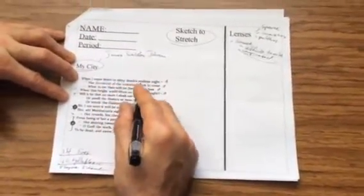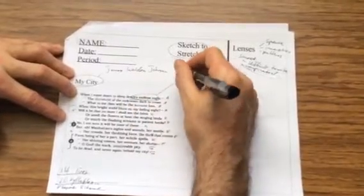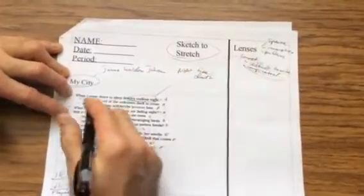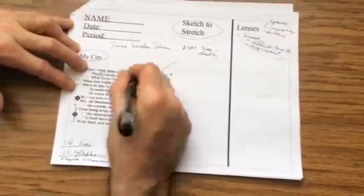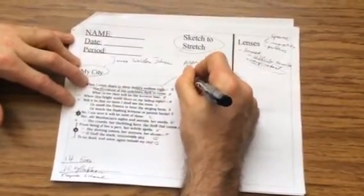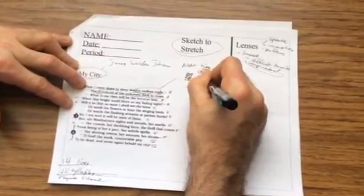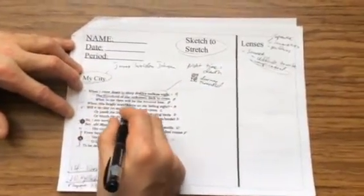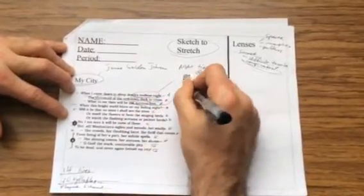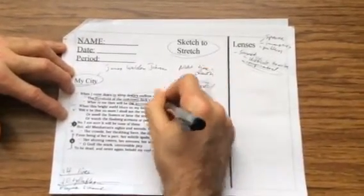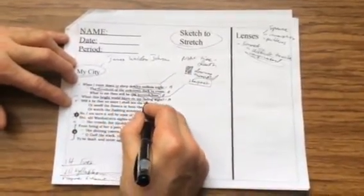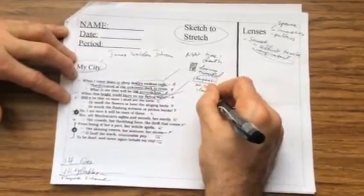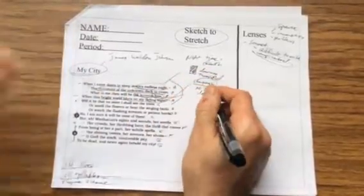But here's what we're going to do. We're going to come down to this. So, when I come down to sleep death's endless night - which here's a metaphor, night time - the threshold of the unknown dark to cross - another metaphor for death, which is to cross a threshold. A threshold is a doorway. What to me then will be the keenest? And keen means to be, like, sharpest. Which one is going to be the sharpest loss? When this bright world blurs on my fading sight - when I can no longer see, particularly because you can no longer see when you're dead. So, what will I miss the most in this frame? What will I miss the most?